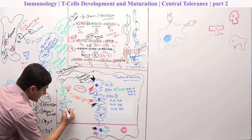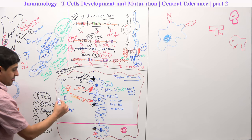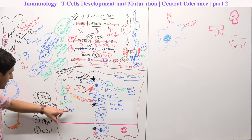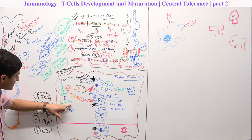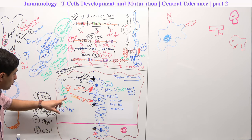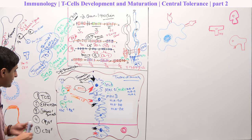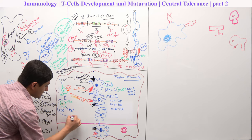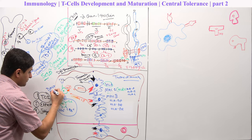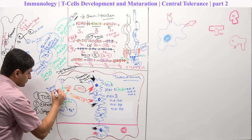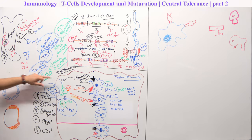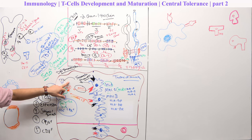Now, what is happening here is that both of them — these cells — have both CD4 and CD8. When they both have CD4 and CD8, we call them double positive cells — double positive thymocytes. When they first migrated here, they were double negative thymocytes.